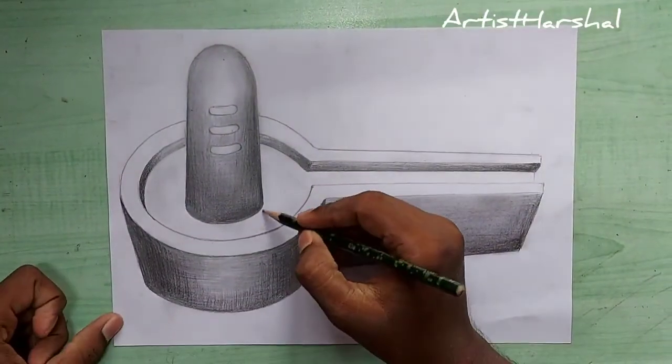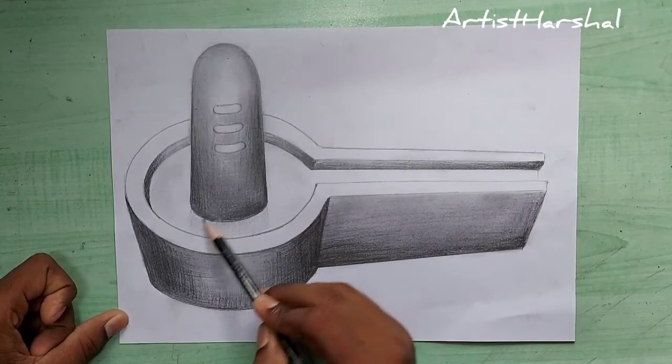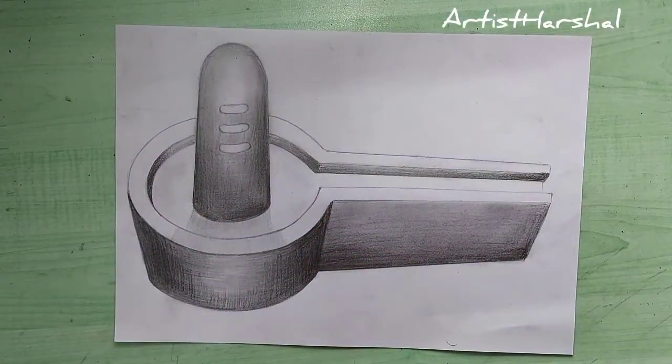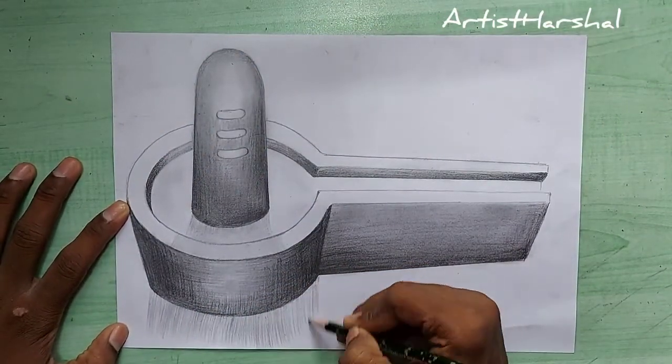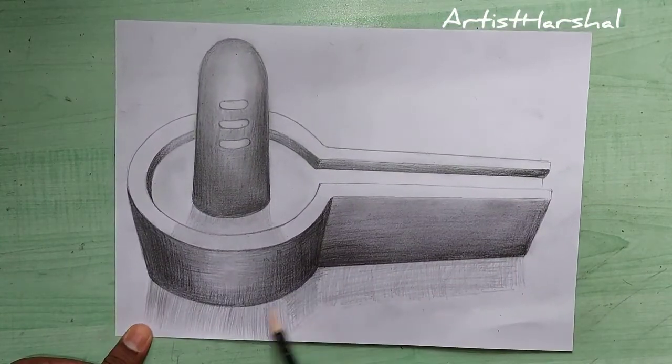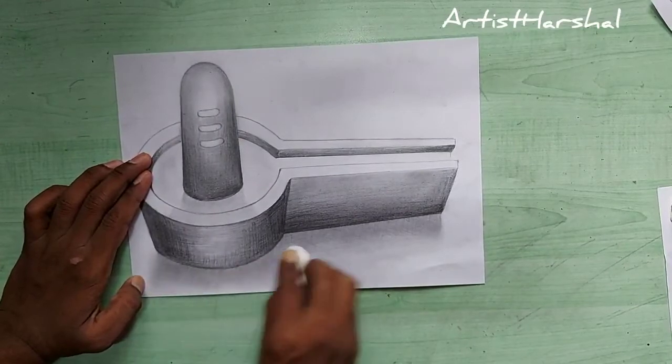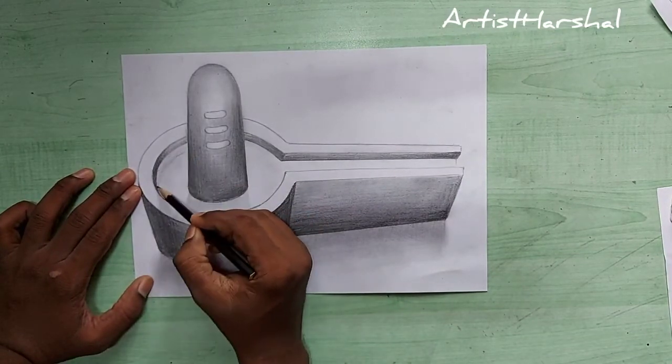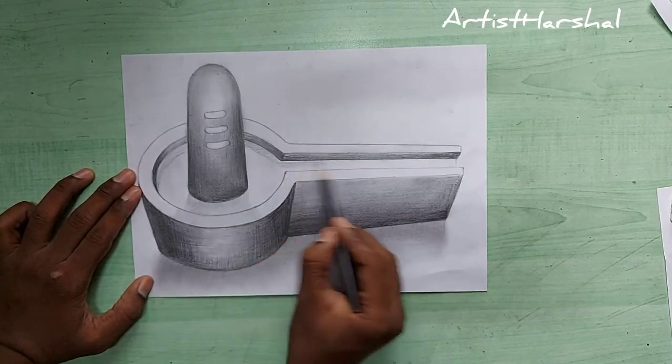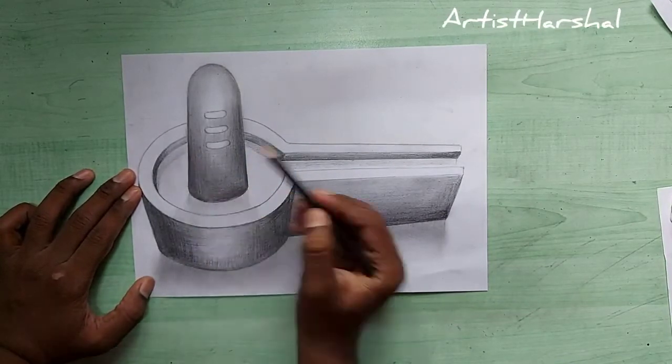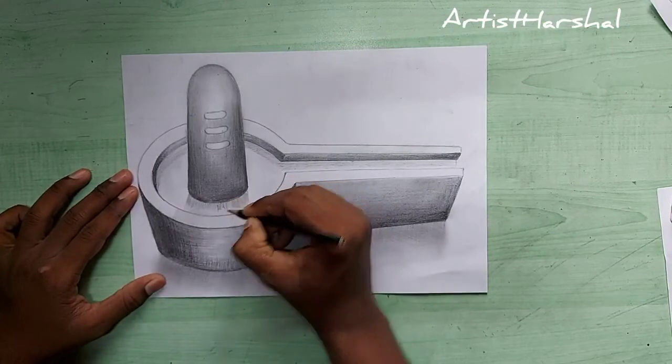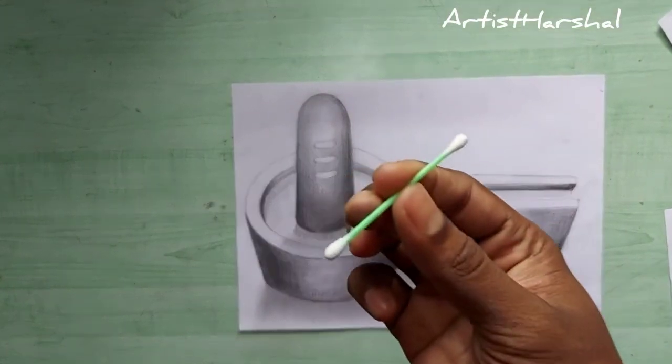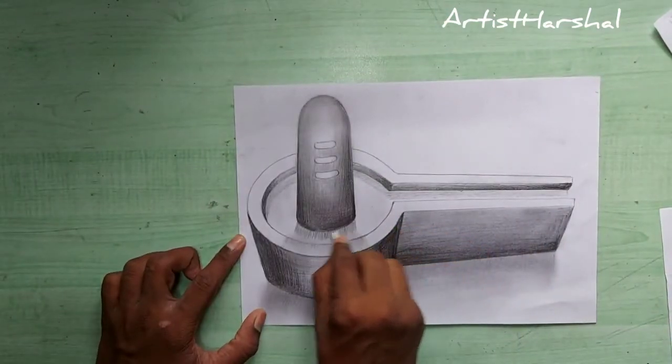See, now shadow work - for shadow work use 2B pencil. I use smoothing with fingers. You can also use cotton for blending. A cotton bud is coming in use for very fine areas.